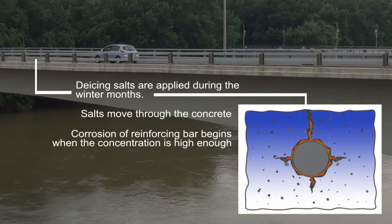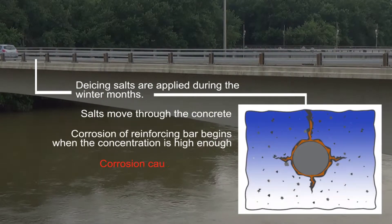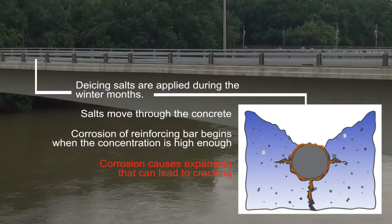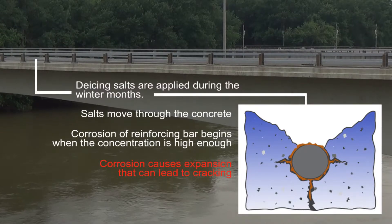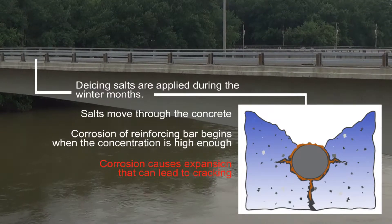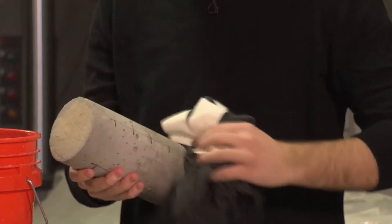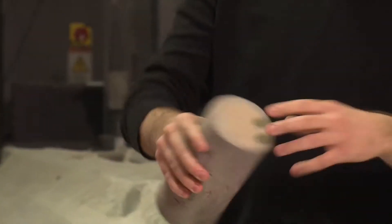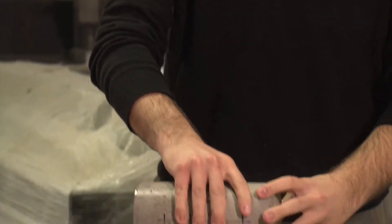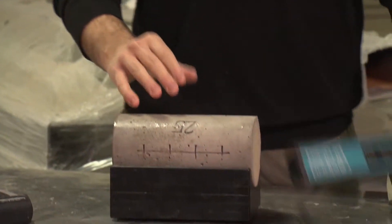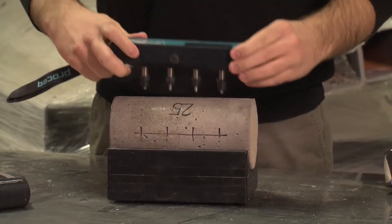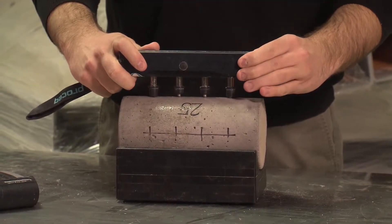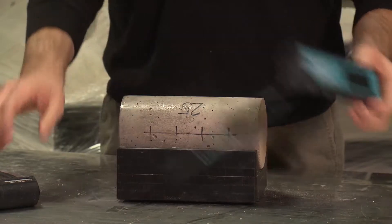The ions that we're most interested in in this particular case are the chloride ions that are coming from the de-icing salts. Measuring the electrical properties of concrete, specifically the resistivity, gives an indication of the speed at which the chloride ions are transported through the concrete.